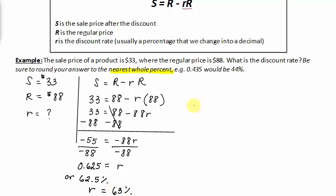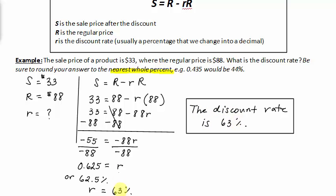Therefore, we could say the discount rate is 63%. From a regular price of 88 to a sale price of 33 was a big jump. So it makes sense why the discount rate was pretty high.